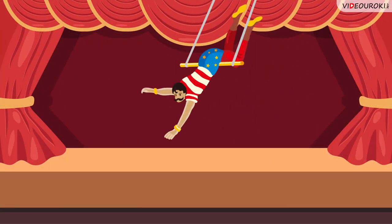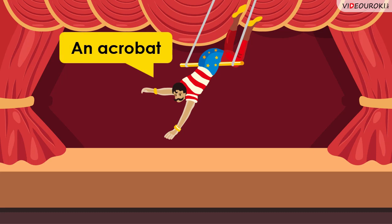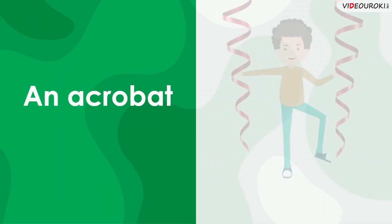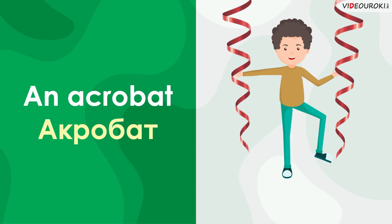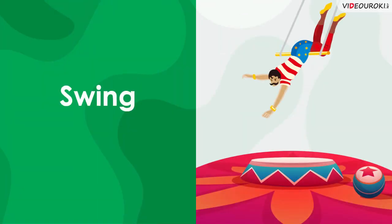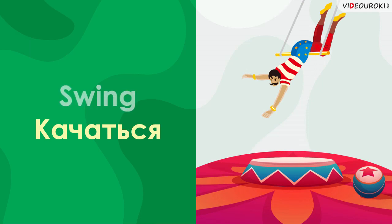Look, this is an acrobat — he can swing. An acrobat — акробат. Listen and repeat: an acrobat, an acrobat. Swing — качаться. Listen and repeat: swing, swing.